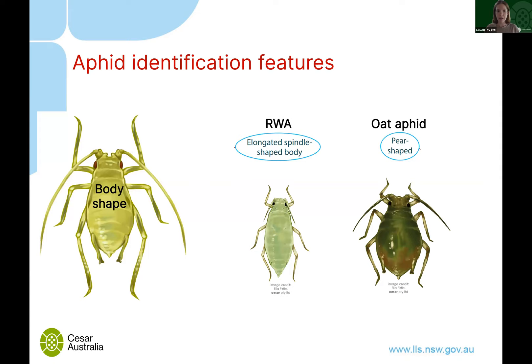One of the first things we look at is body shape — there's quite a range across species. Using the Russian wheat aphid and oat aphid as examples: the Russian wheat aphid has a long spindle shape, while the oat aphid is quite round and globular. It's obvious when you see them next to each other, though less so when looking at just one species alone.